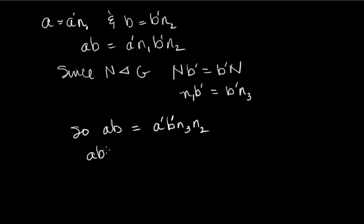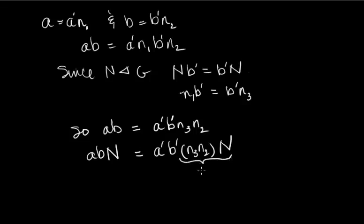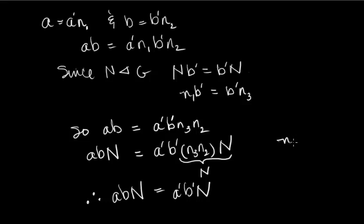Therefore, the coset ABN equals A prime B prime N3 N2 — the coset with that standing on the outside. But we know that N3 and N2 are elements of N, so N3 N2 is simply capital N. We can conclude that ABN equals the coset A prime B prime N. That proves that the operation is well defined.